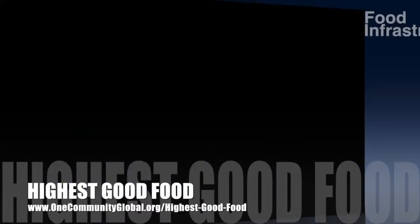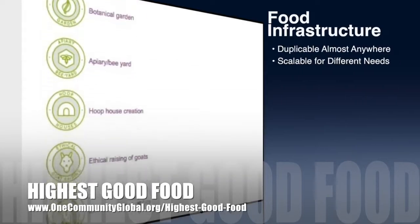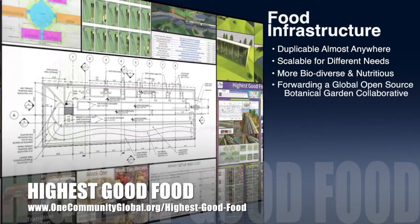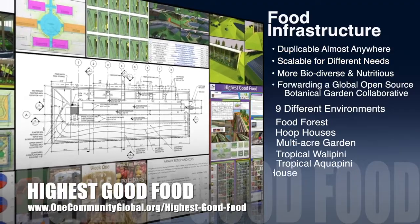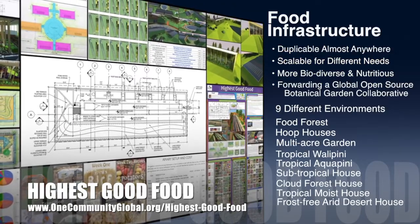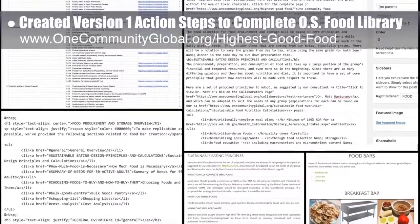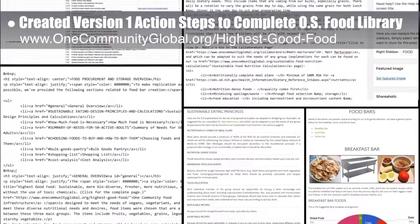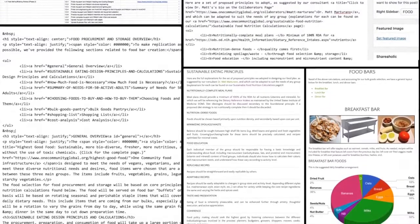One Community's approach to highest good food is duplicable almost anywhere, scalable for different needs, more biodiverse and nutritious, part of forwarding a global open source botanical garden collaborative, and includes nine different free-shared and duplicable growing environments. This week the core team created version one of the complete open source library food program tasks, subtasks, and work packages — outlining everything needed to build and replicate the One Community highest good food component.